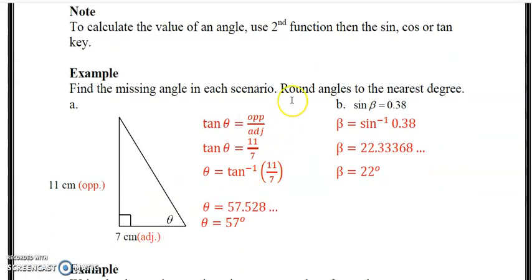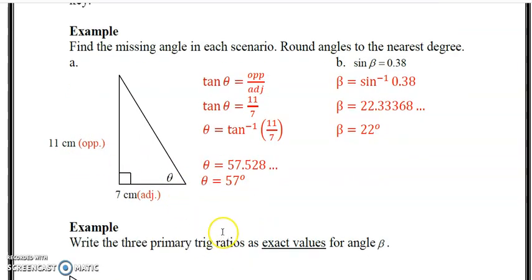So we'll bring our sheet back up and go on to the next example. Now we're on page 4. It says note to calculate the value of an angle, use the second function, and then sine, cosine, or tan. I'll show you how to do that on the calculator again just as a reminder. So now we're going to look for an unknown angle when we're given two sides. So the example says find the missing angle in each scenario, round answers to the nearest degree. So on the first one, we are looking for, we have a diagram this time. So we're looking for theta, and we have the opposite and the adjacent side.